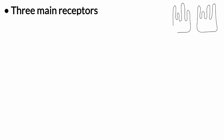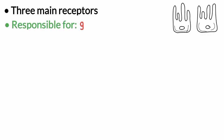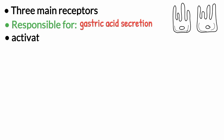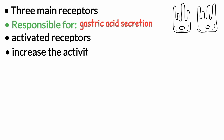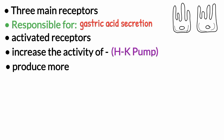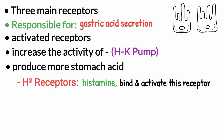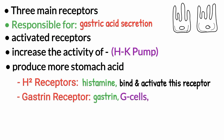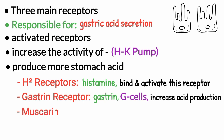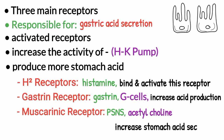There are three main receptors on the parietal cells responsible for the regulation of gastric acid secretion. When activated, these receptors will increase the activity of the hydrogen-potassium pumps to produce more stomach acid. First is the H2 receptor — histamine produced from nearby cells will bind to and activate this receptor. Second is the gastrin receptor — gastrin produced by the neighboring G cells in the gastric mucosa will bind to these receptors and increase acid production. Last is the muscarinic receptor, which binds to acetylcholine, the main ligand of the parasympathetic nervous system, and increases stomach acid secretion.